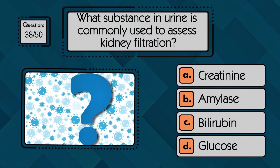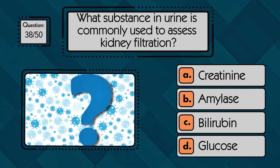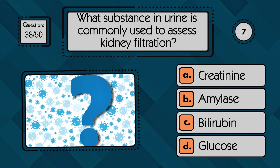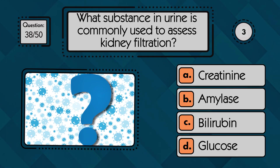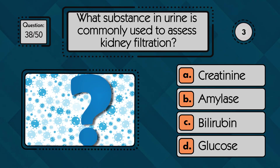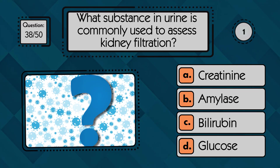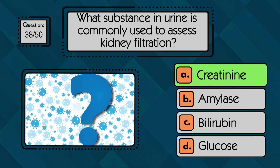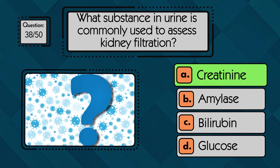What substance in urine is commonly used to assess kidney filtration? Creatinine is the substance most commonly measured to assess kidney filtration.